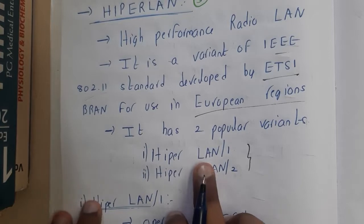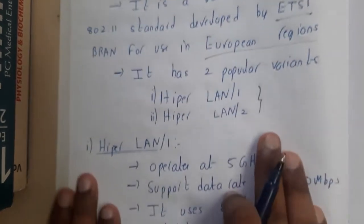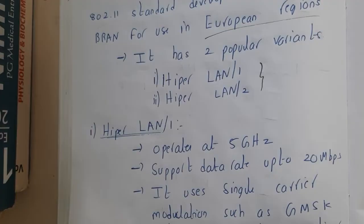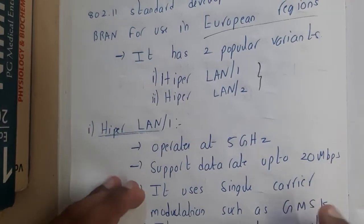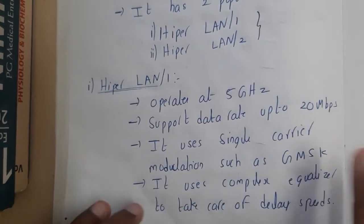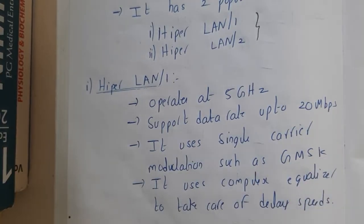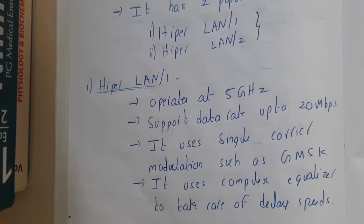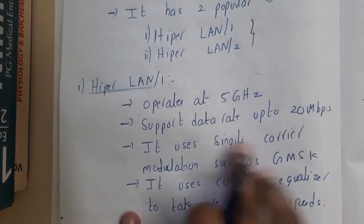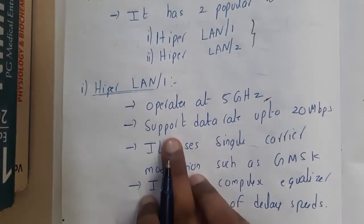HiperLAN has two different versions: HiperLAN 1 and HiperLAN 2. Let us see some introduction and then we will go through their architecture diagrams. These are not too complex — they are really easy, but in examinations you need to elaborate on them.